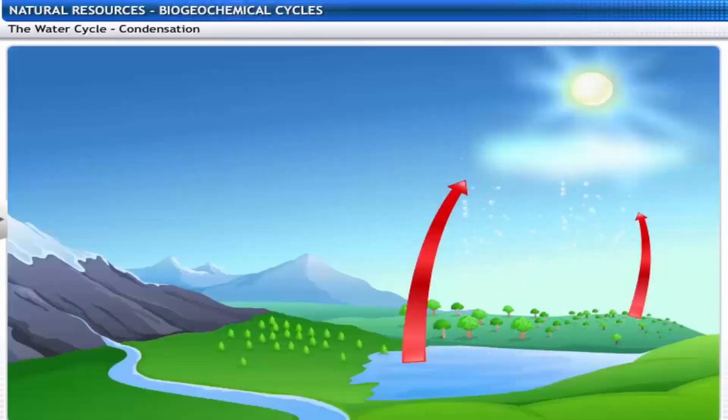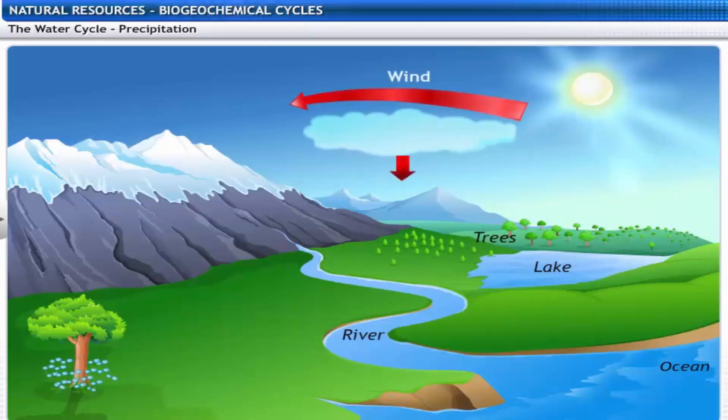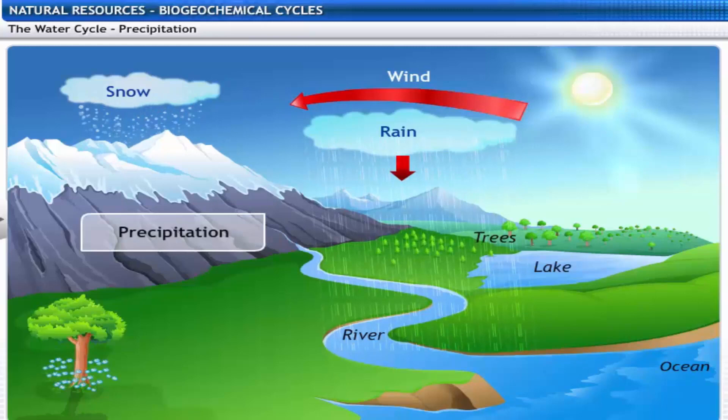This water vapor in the atmosphere changes to water droplets and collects to form clouds. This process is called condensation. Sea breeze moves these clouds and carries them over the land where they break into rain, snow, or fog. This is called precipitation.